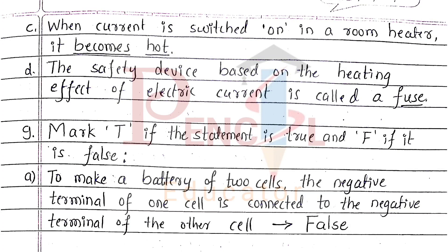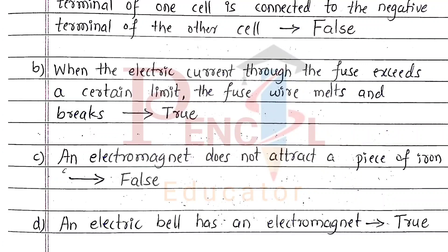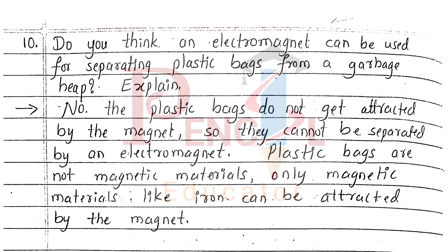Ninth one, mark T if the statement is true and F if it is false. A. To make a battery of two cells, the negative terminal of one cell is connected to the negative terminal of the other cell — False. B. When the electric current through the fuse exceeds a certain limit, the fuse wire melts and breaks — True. C. An electromagnet does not attract a piece of iron — False. D. An electric bell has an electromagnet — True.